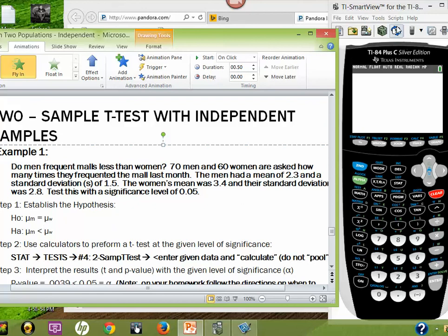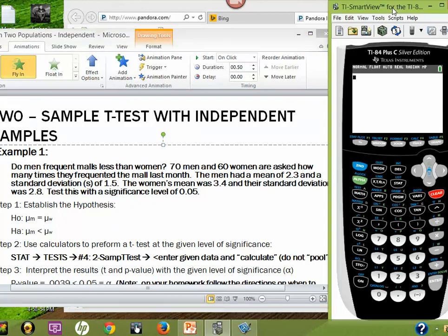Alright, on your calculators, we are going to run what's called a two-sample t-test. And this can be found under stat. Go over to your tests. And then, choice number 4, right there. So, I'm just going to hit 4. And in this case, we are not actually inputting data. We're actually inputting stats. So, I would highlight stats. If we were actually inputting data, we would be putting the individual data values into our lists, in the list function. But here, we're actually giving the results, so we don't have to do that.